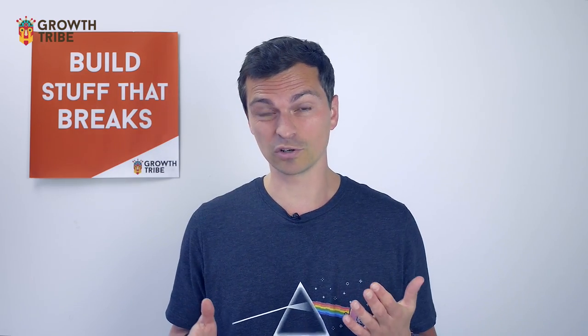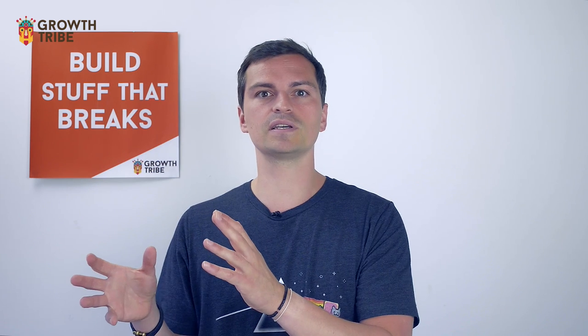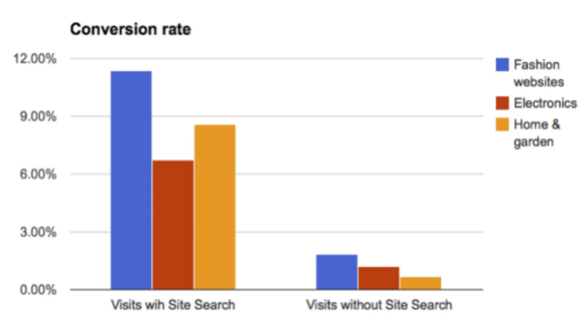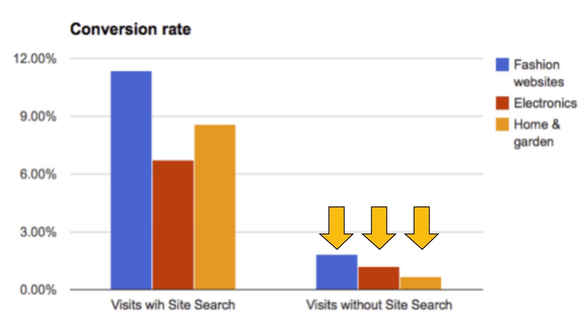Still on the subject of e-commerce, this is also a really cool graph showing the difference in conversion rates on search versus browsing when somebody's actually on the website. What this is basically saying is that your average conversion rate if somebody searches on your website is from 6% to 12%, whereas if they're only browsing, the conversion rate is a lot lower.